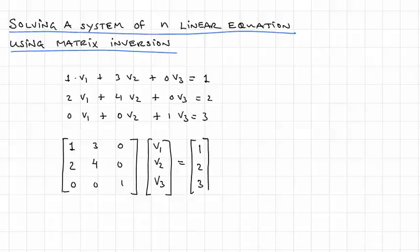So when we multiply a matrix, this is three rows by three columns, and this is a 3 row by one column. Then what we get is a 3 by 1.